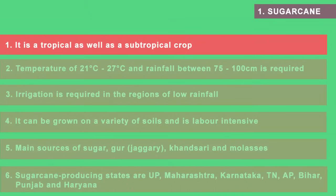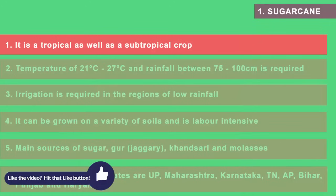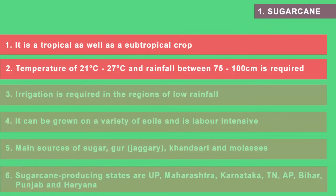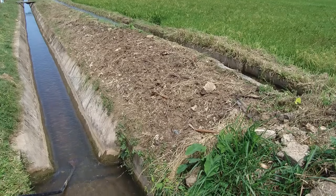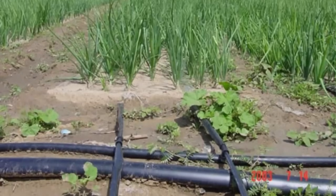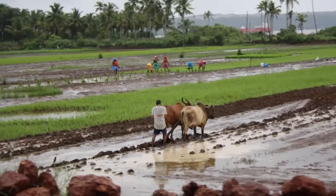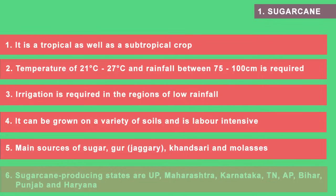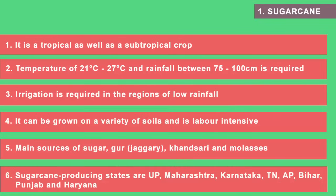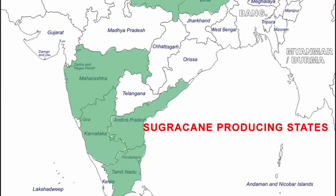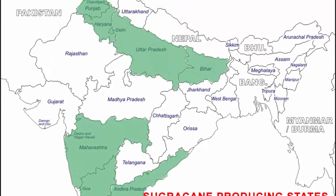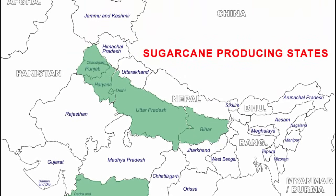The first food crop other than grains is sugarcane. It is a tropical as well as subtropical crop that needs a hot and humid climate, with an ideal temperature of 21 to 27 degrees Celsius and annual rainfall of 75 to 100 cm. Where rainfall is low, irrigation is needed. Sugarcane can be grown on a variety of soils but requires manual labor as it is a labor-intensive crop. It acts as raw material for sugar, jaggery, khansari and molasses. Uttar Pradesh is the leading producer of sugarcane, followed by Maharashtra, Karnataka, Tamil Nadu, Andhra Pradesh, Bihar, Punjab and Haryana.